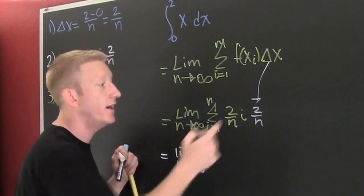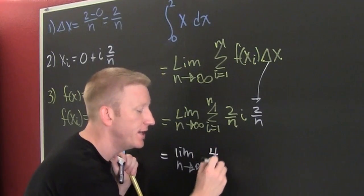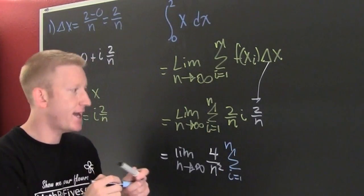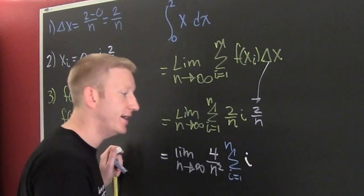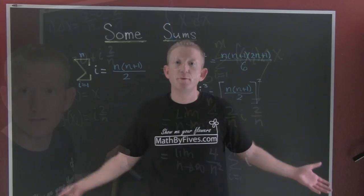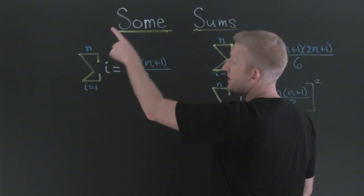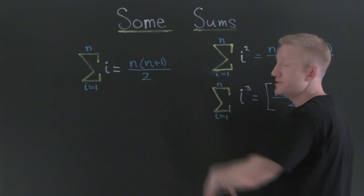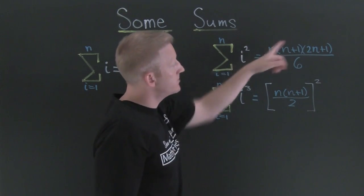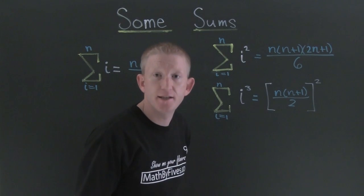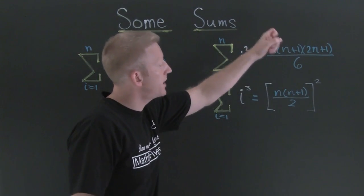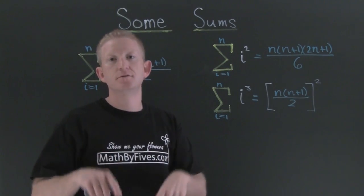So this becomes the limit as n goes to infinity of 4 over n squared times the sum from i equals 1 to n of i. Now we're at the part where we need sum formulas. We have: the sum of the first n terms of i equals n times (n+1) over 2; the sum of i squared from 1 to n equals n(n+1)(2n+1) divided by 6; and the sum of i cubed from 1 to n equals [n(n+1)/2] squared.